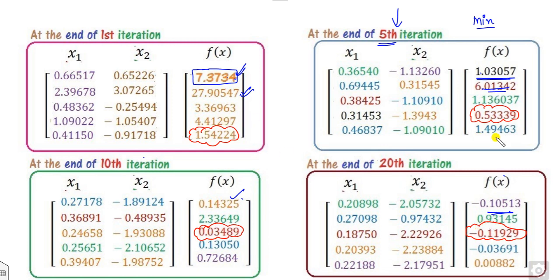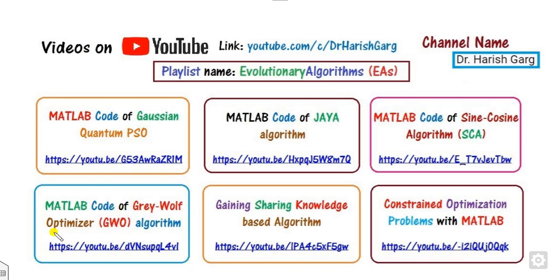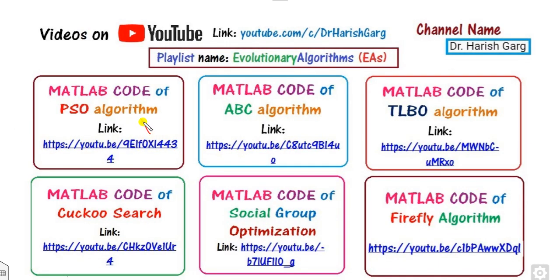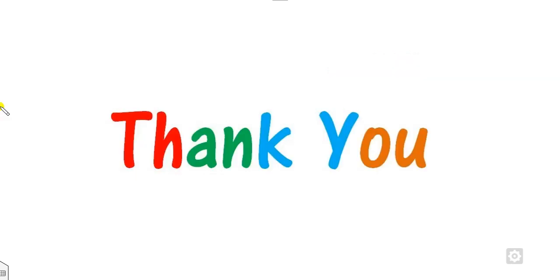Over 200 iterations, the convergence graph shows the function value decreasing. This is the simple working procedure of the GWO algorithm. The MATLAB code is already available in the playlist under the evolutionary algorithms channel, Dr. Hrishkar. You can also find MATLAB codes for Gaussian quantum sine cosine algorithm, PSO, ABC, ATL, and many more. Browse the link to find the other codes. I hope you enjoyed this session — share the video with your friends. Best of luck, happy learning!